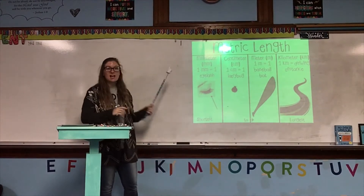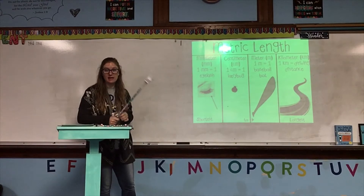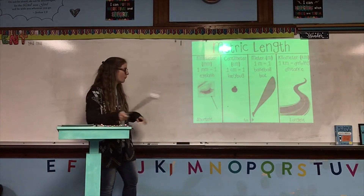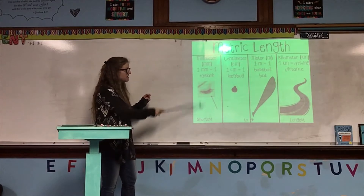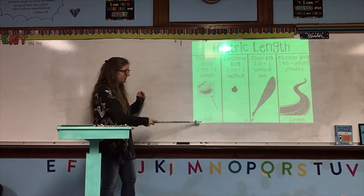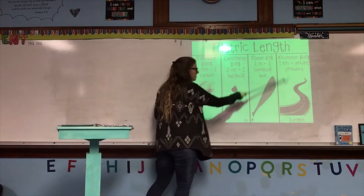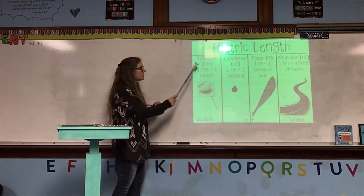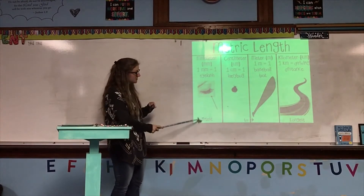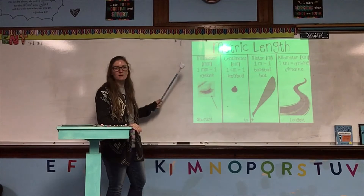So this is set up just the same way that the customary length anchor chart was set up, where we have the shortest of the units on the left, and then it goes to the longest units on the right. So the shortest metric unit that we will be looking at is the millimeter.